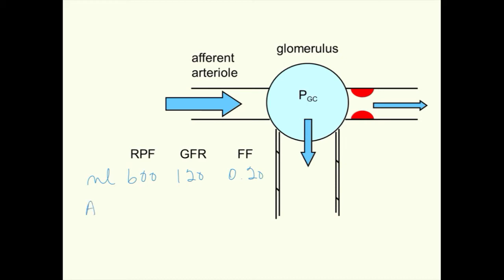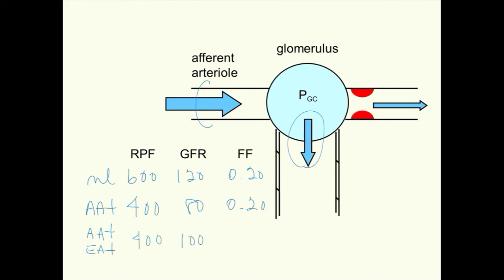If the efferent arteriole constricts, as would be expected with volume depletion and increased sympathetic activity, we might expect renal plasma flow and GFR to fall proportionately to 480 mLs per minute, still maintaining a filtration fraction of 0.20. However, if the efferent arteriole also constricts because of angiotensin II being around, the percent of plasma filtered increases, so that we might expect a renal plasma flow of 400 and a GFR of 100, a filtration fraction of 0.25. Thus, the efferent constriction induced by A2 helps to preserve GFR and the ability to get rid of BUN, creatinine, etc., despite a decrease in renal plasma flow.